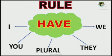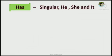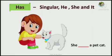So, let's see the rules again. Has with singular, with he, with she and it. So, see the examples. She dash a pet cat. What we are using with she? Yes. She is there in the rule box. Yes. So, what we will write here? We will write has. She has a pet cat.